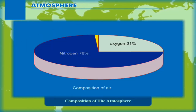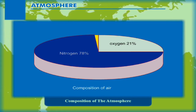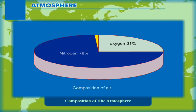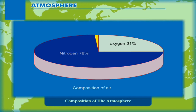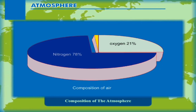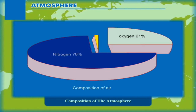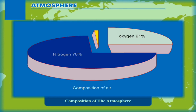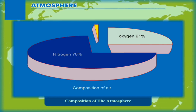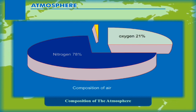Composition of the atmosphere: Air is a mixture of several gases in different proportions. The composition is as follows: Nitrogen 78%, Oxygen 21%, and other gases 1%. Some dust particles are also present in the atmosphere.